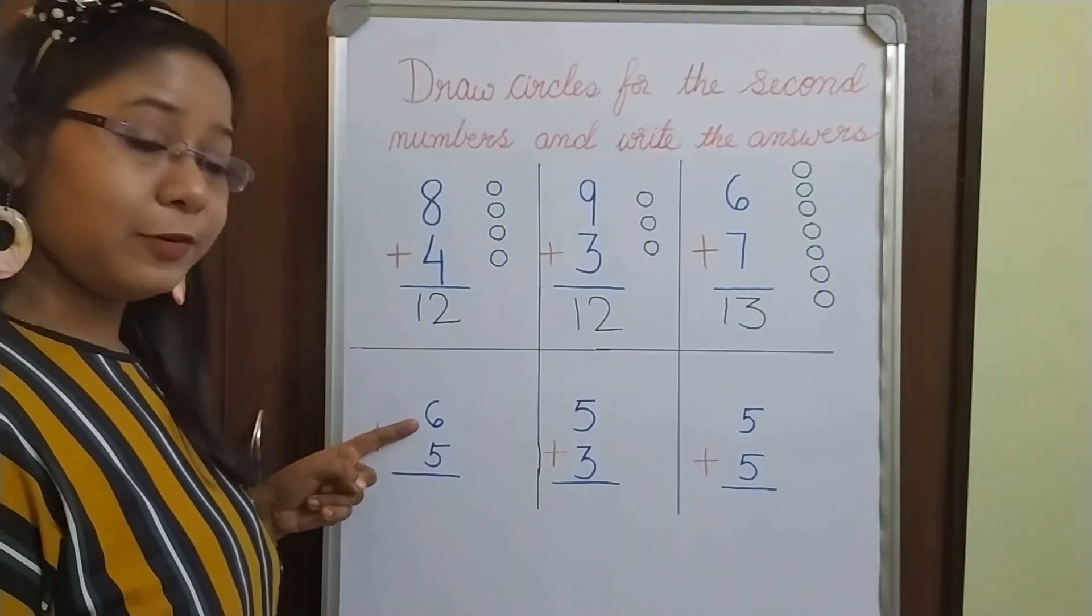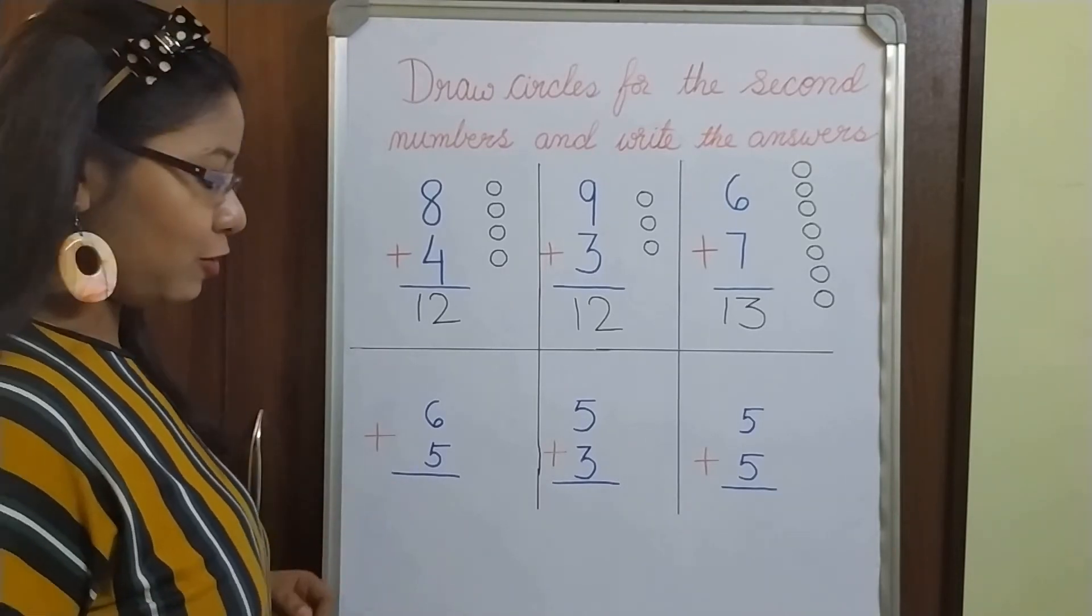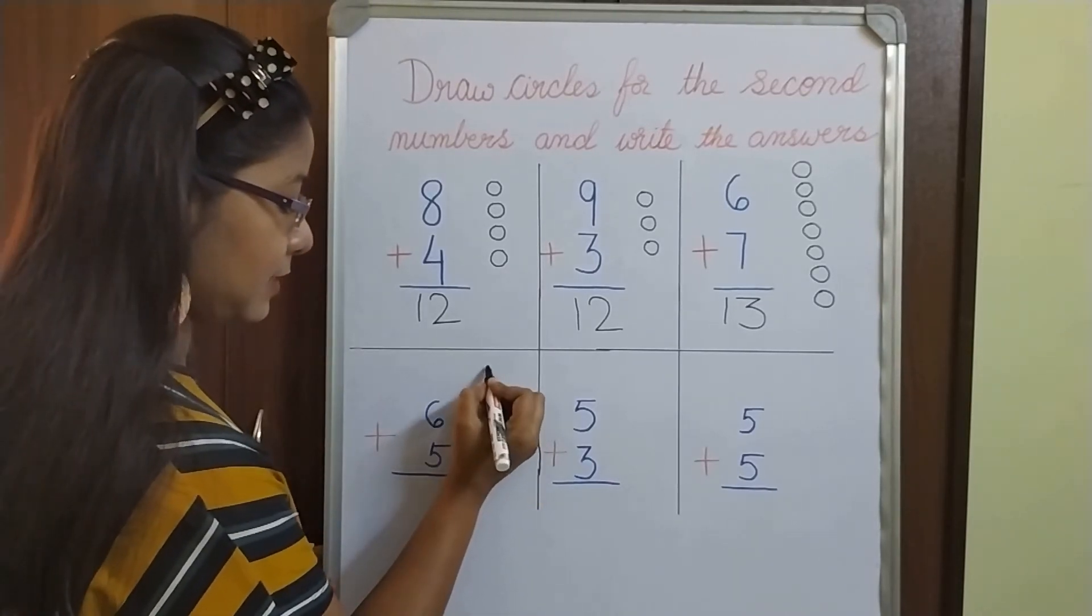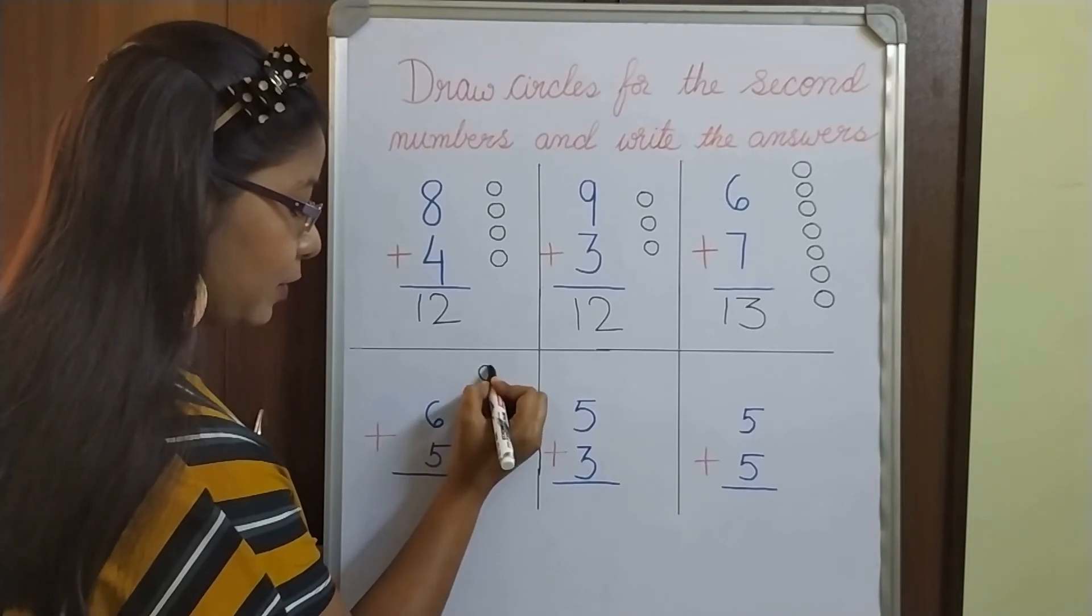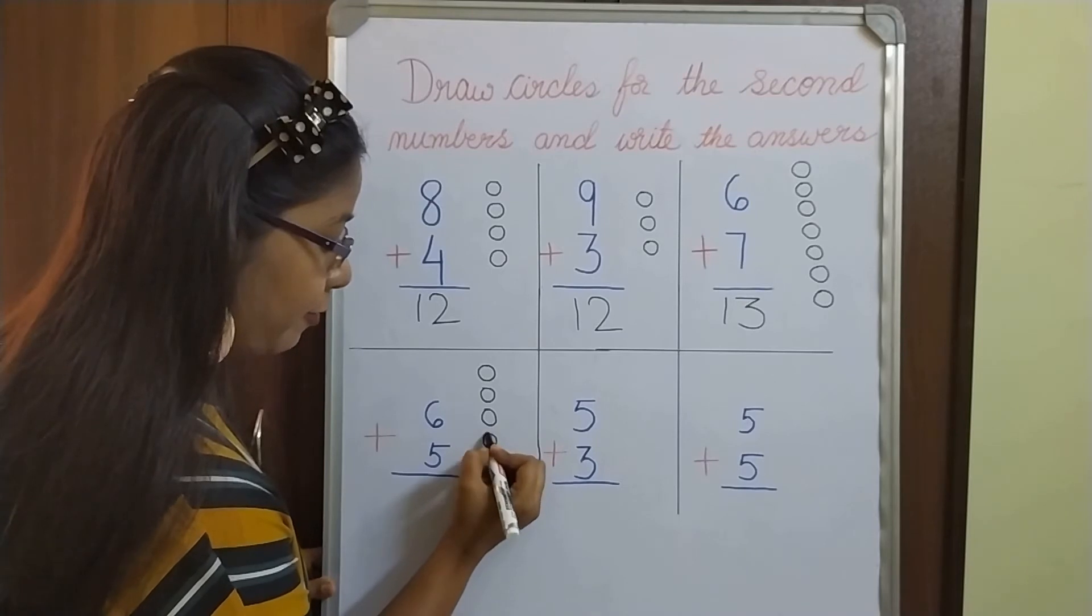Our next one is? First number is 6. Second number is 5. Right? So here I will draw 5 circles. Let's count together. 1, 2, 3, 4, 5.